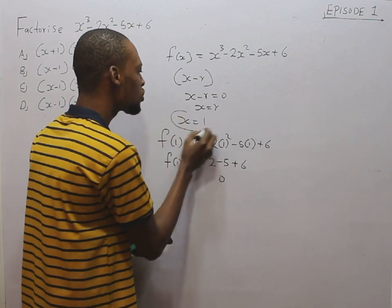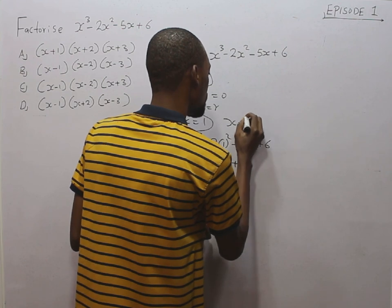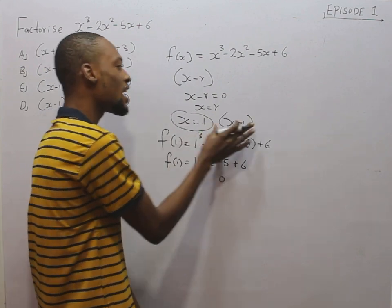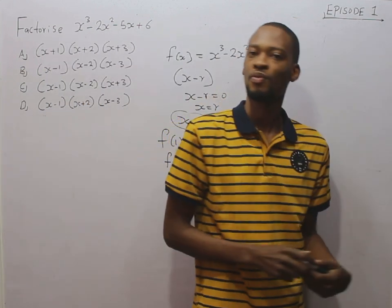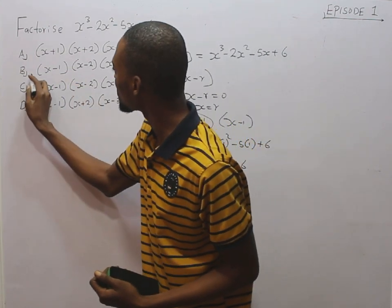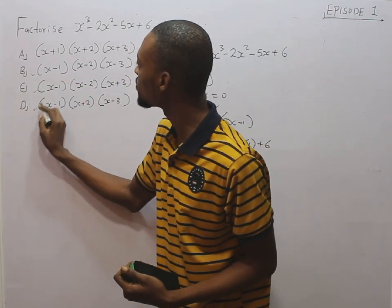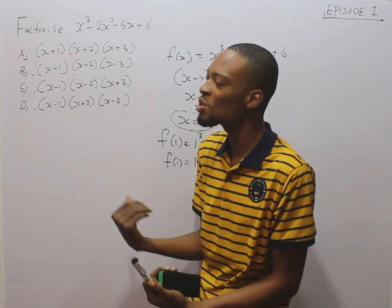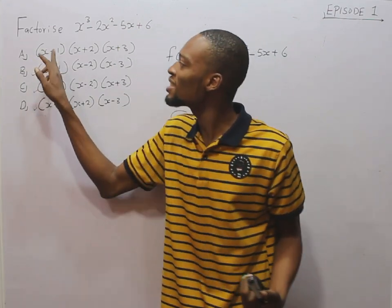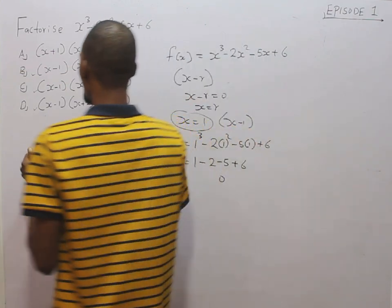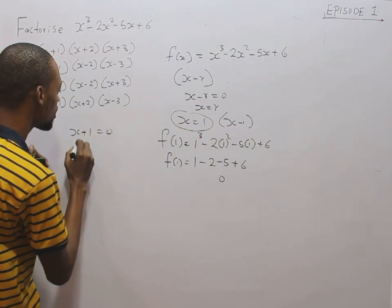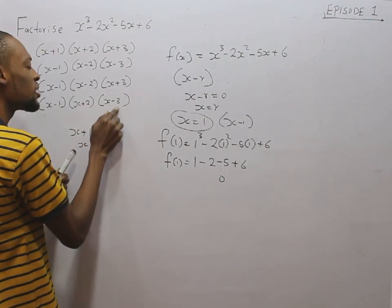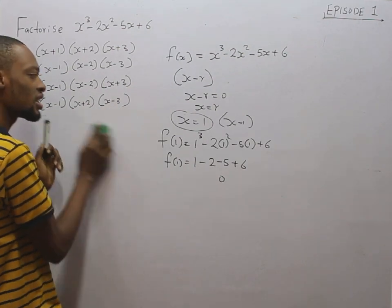When you substitute s equals 1 into this expression, the remainder is 0, which means s equals 1 is a factor. s equals 1 can be written as s minus 1 — if you take 1 to the other side it becomes negative. So s minus 1 is the first factor. Take note: s plus 1 simply means s equals minus 1, because s plus 1 equals 0 gives s equals minus 1. And s minus 3 is the same thing as s equals 3.